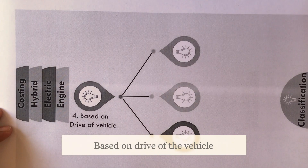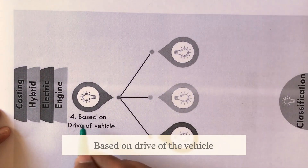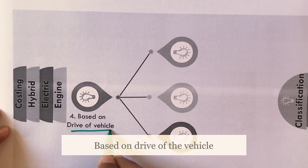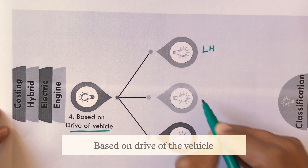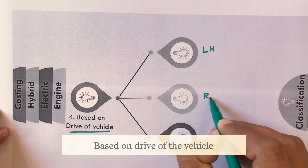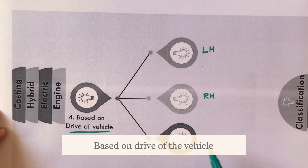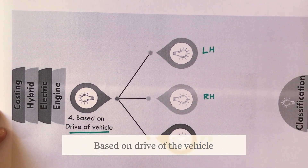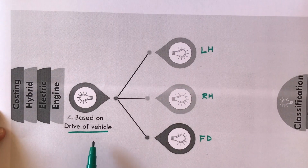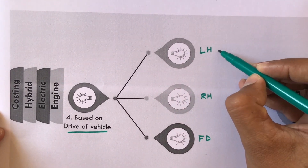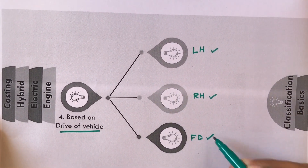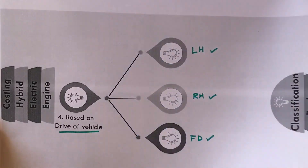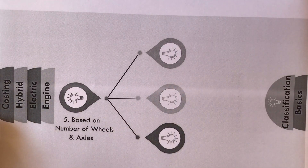The next basis of classification is based on the drive of the vehicle. That may be left-hand drive vehicles, right-hand drive vehicles, or fluid drive vehicles. Depending upon the drive, vehicles are classified as left-hand drive, right-hand drive, or fluid drive vehicles.